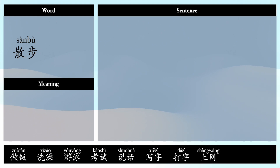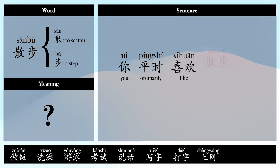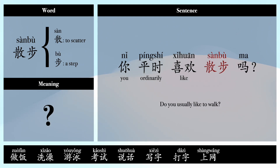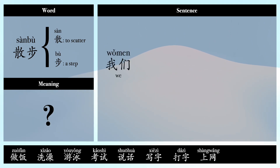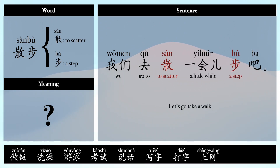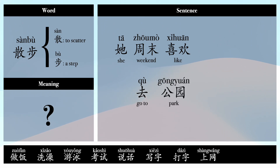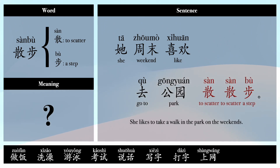散步 — 散: to scatter, 步: a step (i.e., to take a walk). Example sentences: 你平时喜欢散步吗? (Do you usually like to take walks?) 我们去散一会儿步吧。(Let's go for a short walk.) 他周末喜欢去公园散散步。(He likes to go for a walk in the park on weekends.)